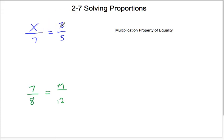Here we have x over 7 equals 3 fifths. We need to isolate the x value, so we need to get rid of this division by 7. We can do that using the multiplication property of equality by multiplying both sides by 7, and the 7s go away here.